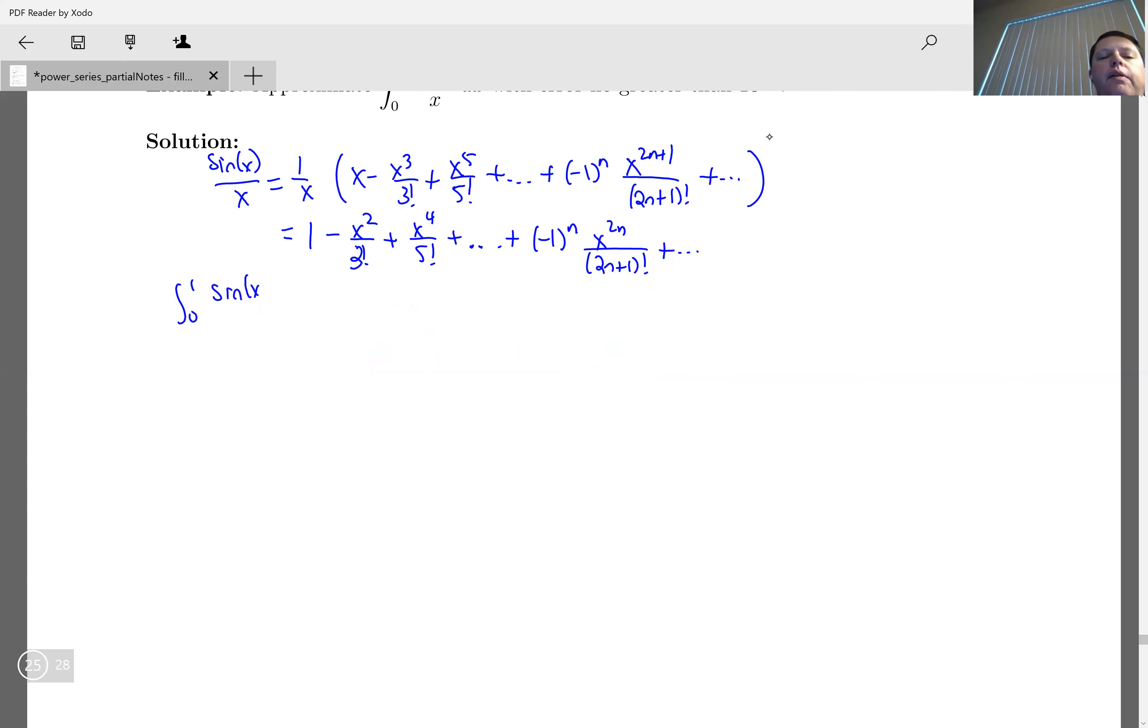The series that I've just got. So we just integrate term by term, so we get x minus x cubed over 3 times 3 factorial plus x to the 5 over 5 times 5 factorial, and the general term we get x to the 2n plus 1 over 2n over 2n plus 1 times 2n plus 1 factorial, plus etc. forever and ever.